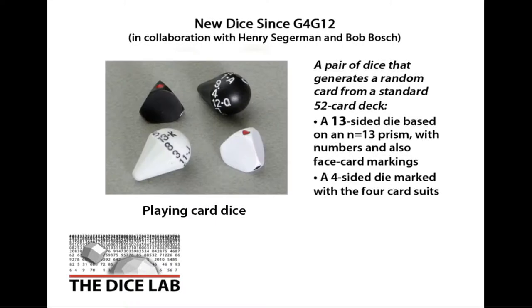Hot off the presses, a D13. And this couples with a special D4 — you roll the two together and you choose randomly a card from a standard 52-card deck. And that'll be in your gift box.